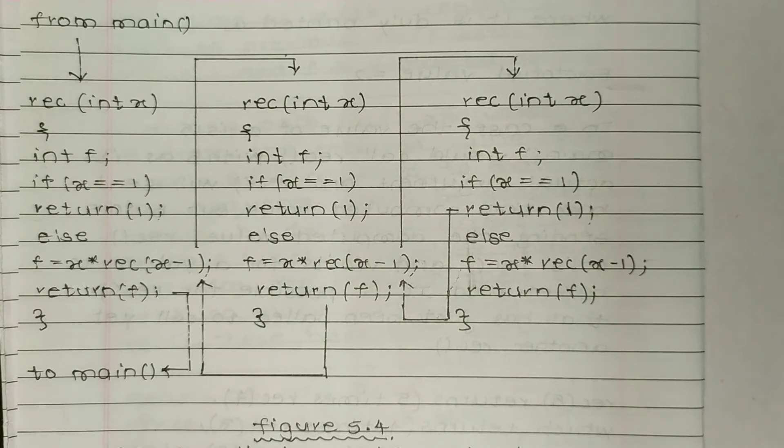Visualize the number entered as 3. Go through the figure carefully. The first time rec is called from main, x collects 3. Since x is not equal to 1, the if block is skipped.